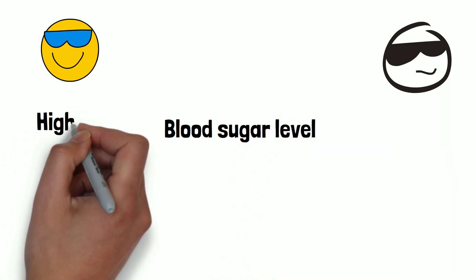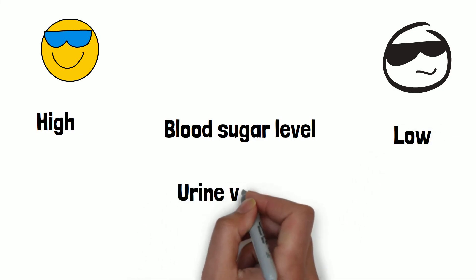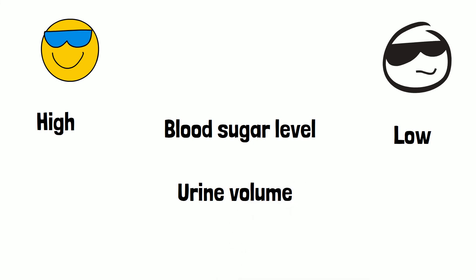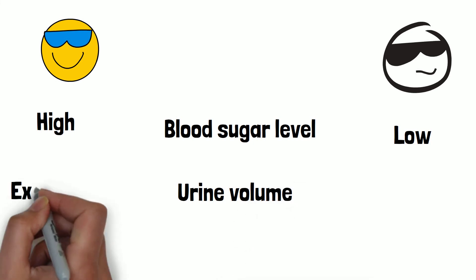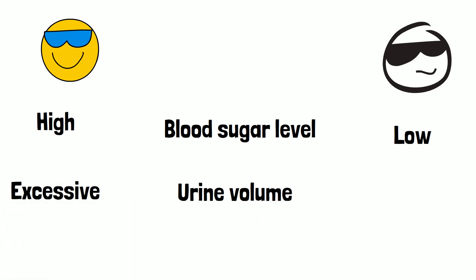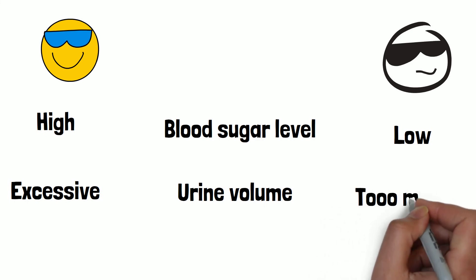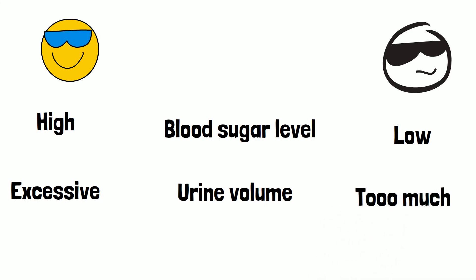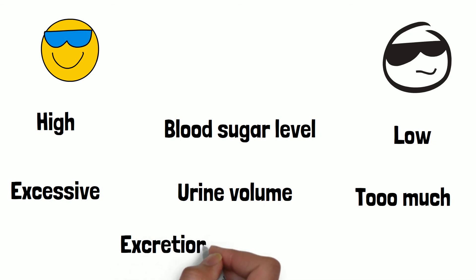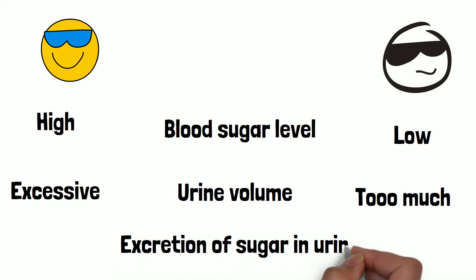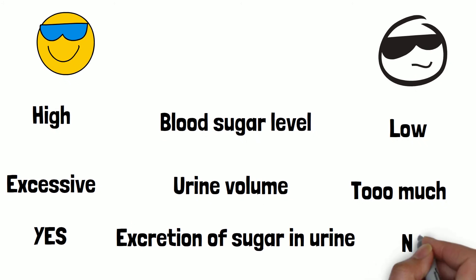The second difference between DM and DI is blood sugar level — in diabetes mellitus, blood sugar level is high compared to diabetes insipidus. The third difference is urine volume: urine volume in diabetes mellitus is excessive, but in diabetes insipidus it is even greater.